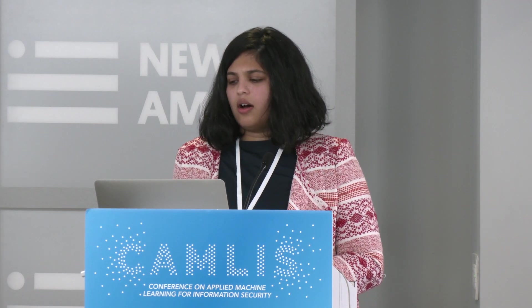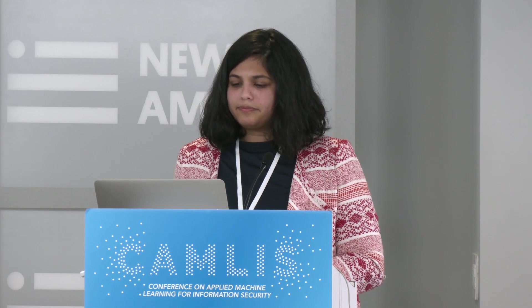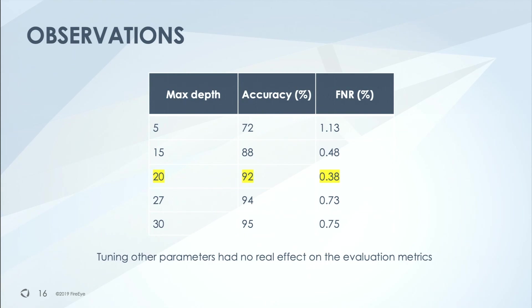I wanted to check how much gain there was from using lexical features at all. I compared pure N-gram based models with something that has no N-grams and then a combination of N-grams and lexical features. Pure N-gram based models without any lexical features had an FPR higher than what we wanted. Using just lexical features did not give a good enough false negative rate. But when I combined the two, results improved. A combination of 1000 N-grams and all the lexical features gave FPR within limits and a low enough false negative rate. I also observed that tuning just the max depth of the trees had a significant impact on model performance; other parameters not as much.